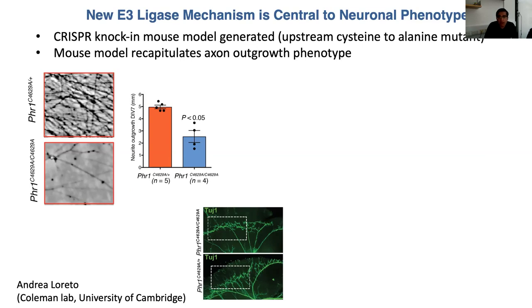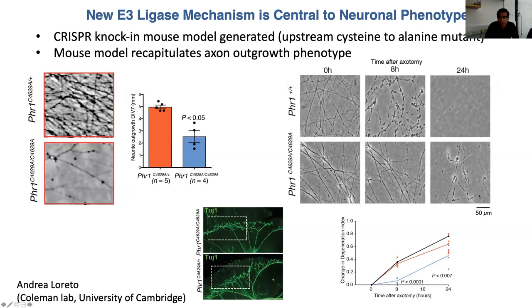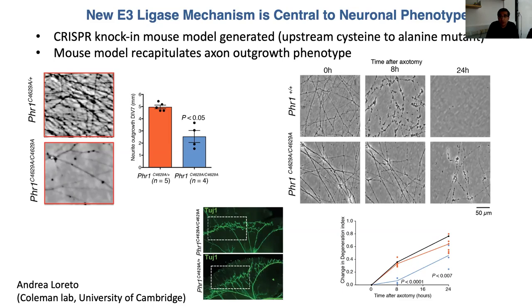We also asked whether loss of the RCR machinery confers axon protection. Testing the stunted neurites, we did observe significant protection, though we think it is masked by the stunted outgrowth. We believe that conditionally knocking out RCR activity in an adult animal once neurodevelopment is complete would reveal a much more pronounced protective phenotype — as would pharmacological inhibition. We think inhibiting this RCR machinery could be a very high-value therapeutic strategy for treating neurological disorders such as chemotherapy-induced neuropathies and potentially neurodegenerative diseases.